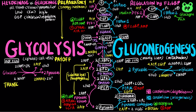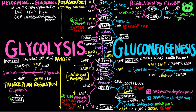Glycolysis and gluconeogenesis are also regulated by several transcription factors. Sterol regulatory element binding proteins, or SREBP, turn on the synthesis of glucokinase and pyruvate kinase, thereby promoting glycolysis. SREBP is activated by insulin and inhibited by glucagon. On the other hand, cyclic AMP response element binding protein, or CREB, is activated by glucagon and promotes gluconeogenesis. FOX-O1, or forkhead box O1, also promotes gluconeogenesis, and it is inhibited by insulin.